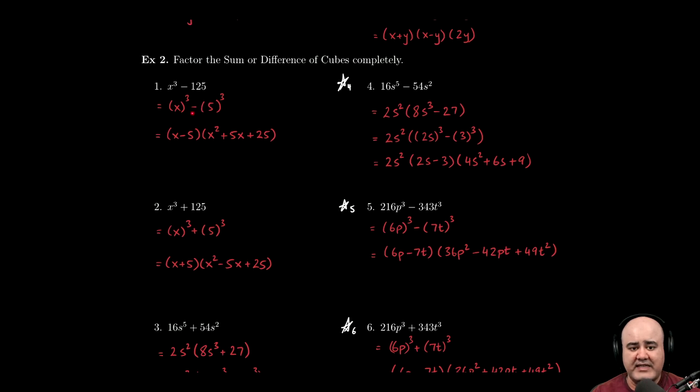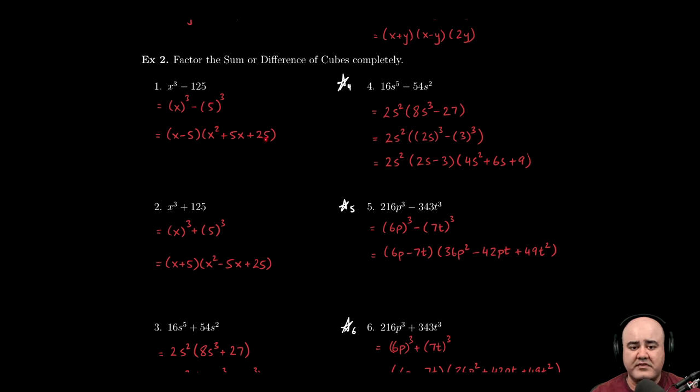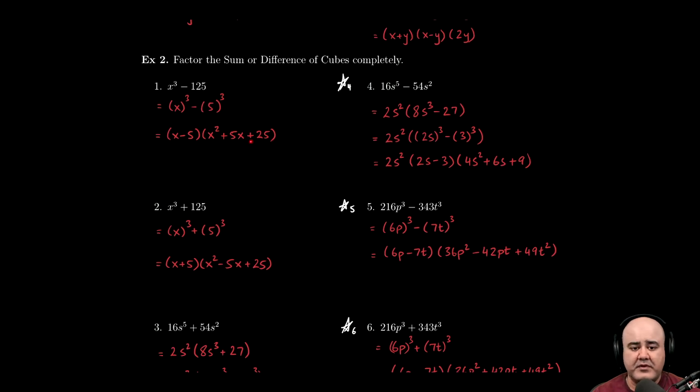Plus ab, so a times b, x times 5, is just 5x, plus b squared, square of the second term. So square of 5 would be 25. And that's it. This cannot be factored further. This trinomial is always going to be prime.